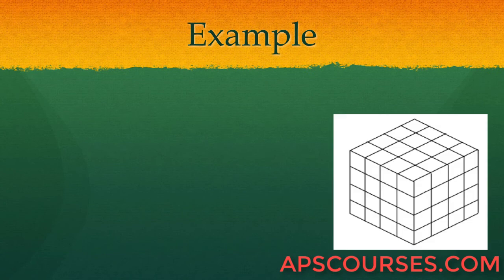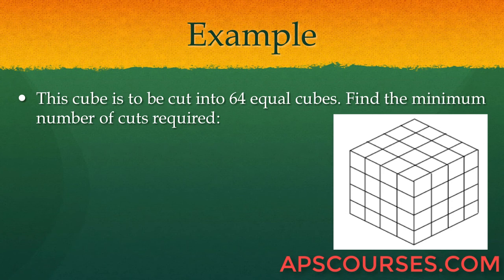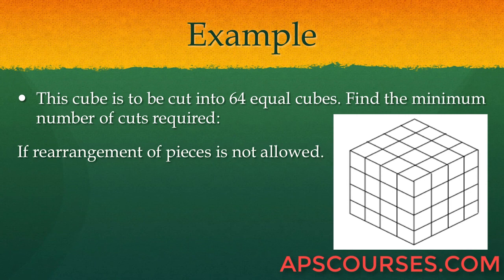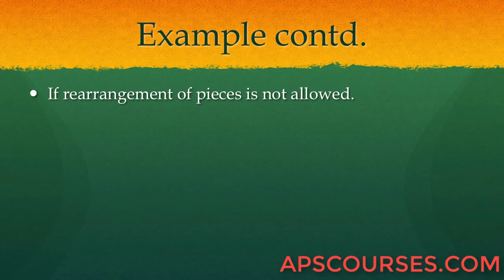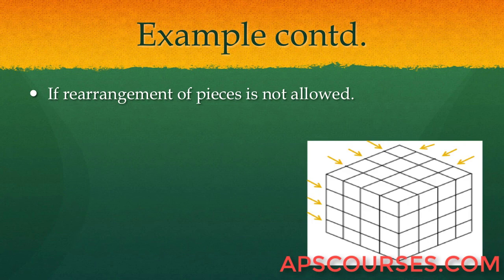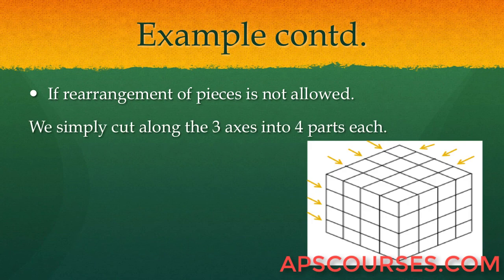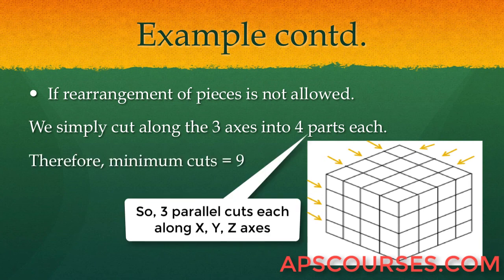Next example: A cube is to be cut into 64 equal smaller cubes. We need to find the minimum number of cuts required, given that rearrangement of pieces is not allowed. If rearrangement is not allowed, we cut each of the 3 axes into 4 parts each, so the minimum number of cuts is 9.